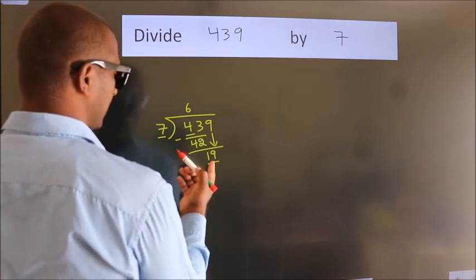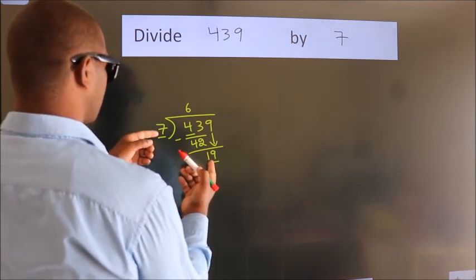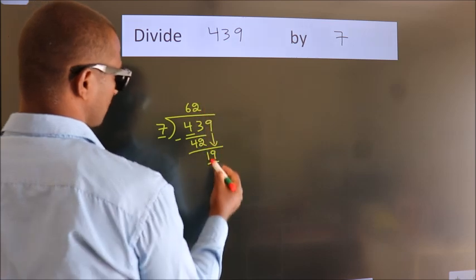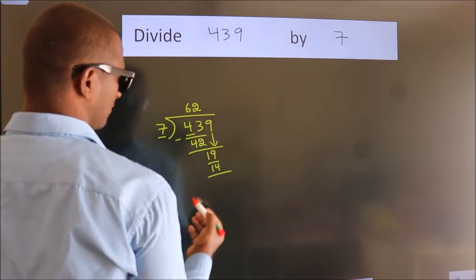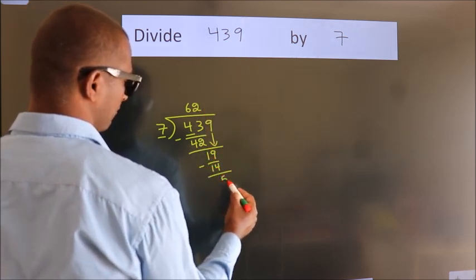A number close to 19 in the 7 table is 7 times 2, which is 14. Now we subtract. We get 5.